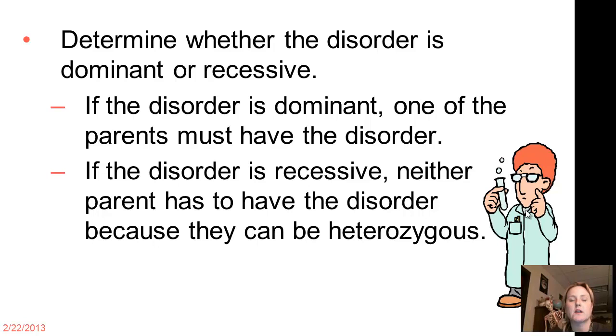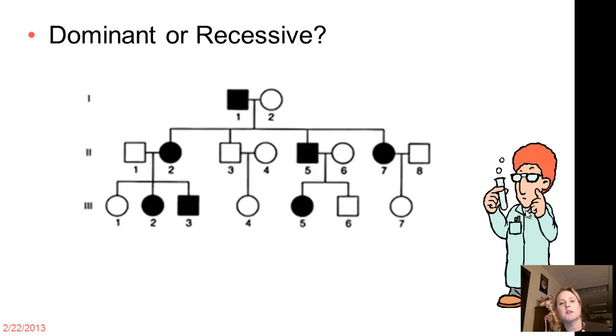So when we look at this, we're trying to figure out whether a trait is dominant or recessive. A dominant trait, if you remember, if it's present, it will always show up. So you expect to see a dominant trait in every generation. A recessive trait, however, will skip some generations. So take a look at this example of a pedigree chart and tell me whether you think this is a dominant or a recessive trait.